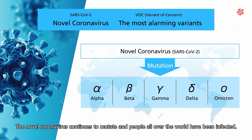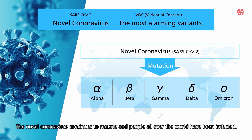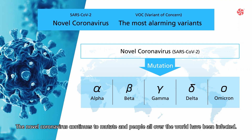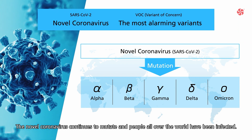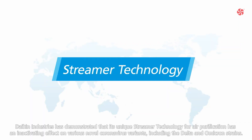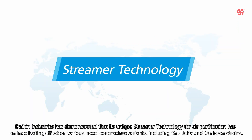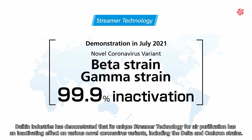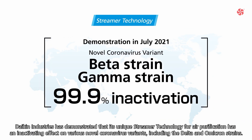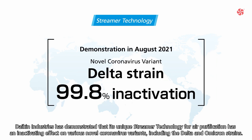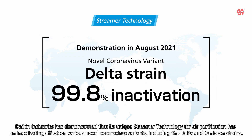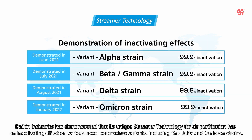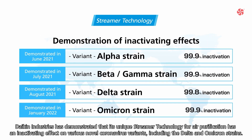The novel coronavirus continues to mutate and people all over the world have been infected. Daikin Industries has demonstrated that its unique Streamer technology for air purification has an inactivating effect on various novel coronavirus variants, including the Delta and Omicron strains.